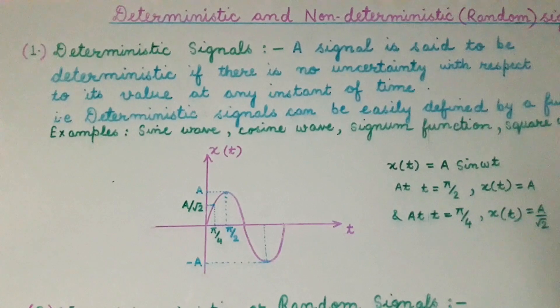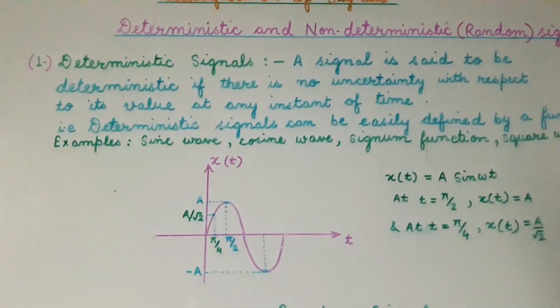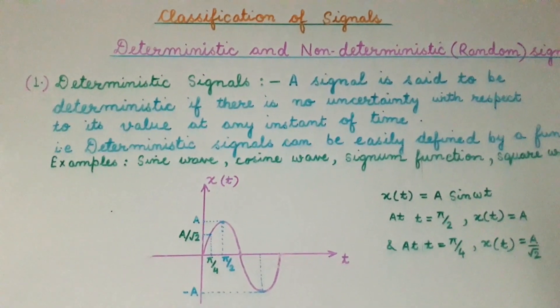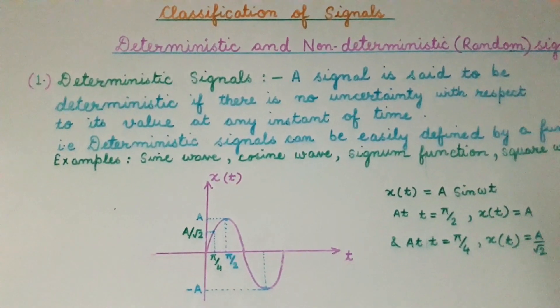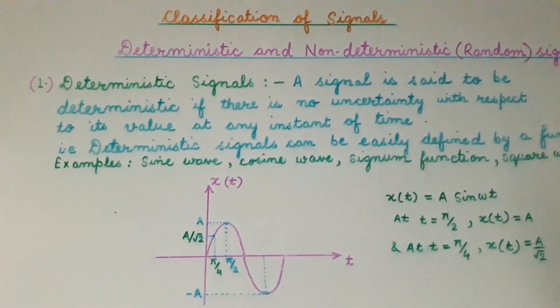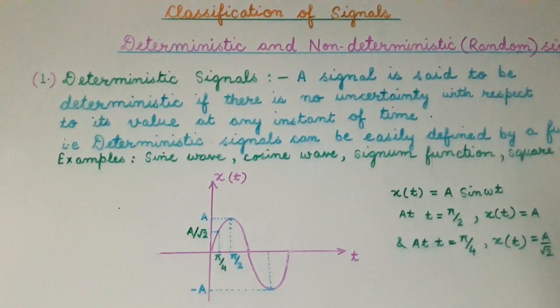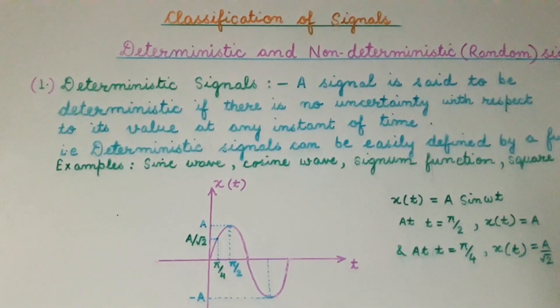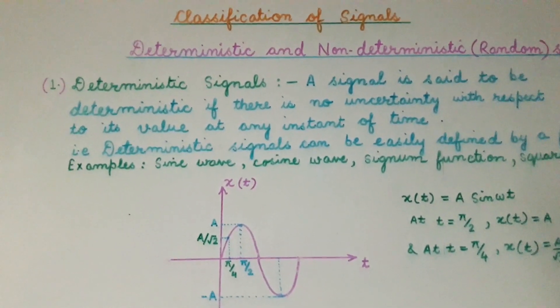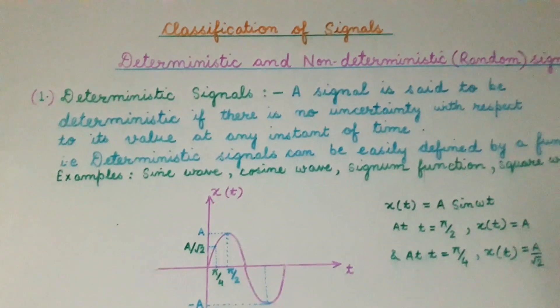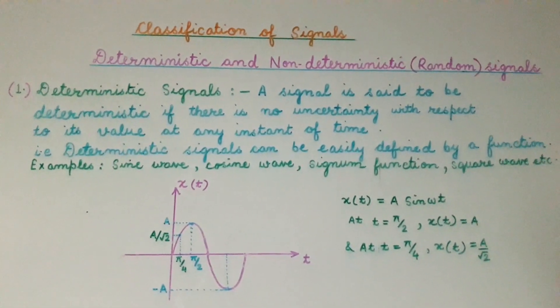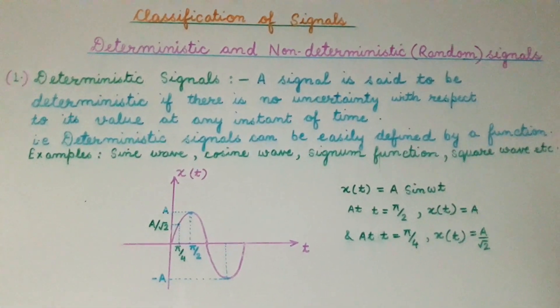We can say that a deterministic signal is one which has no uncertainty in its value at any instant of time. So this is all about the deterministic signal.